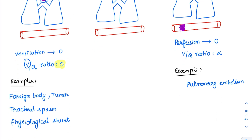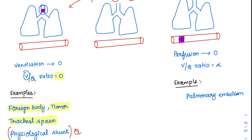Examples of V/Q ratio = 0 include: foreign body obstruction blocking the airway, a tumor obstructing the airway, or severe tracheal spasm where no air enters the system at all. Another very important example is physiological shunt. In the pulmonary system, we have two circulations — pulmonary and bronchial. The pulmonary circulation gets oxygenation, whereas the bronchial circulation supplies the lung tissue and then directly connects with the arterial system, so this blood gets no oxygenation. We consider ventilation as 0 here because perfusion is present but there is no gaseous exchange, making the V/Q ratio 0.